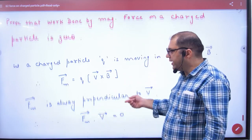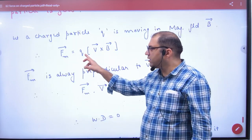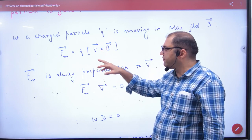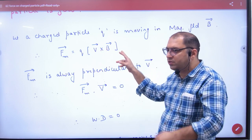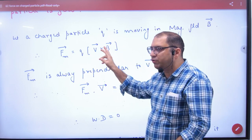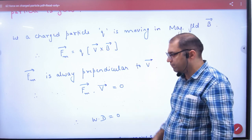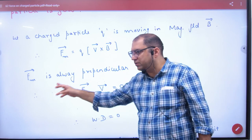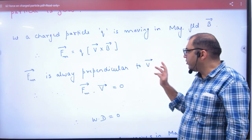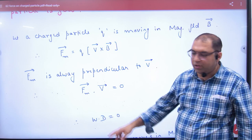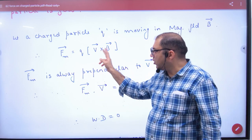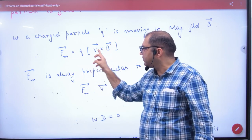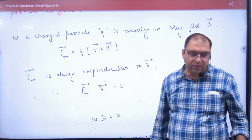Mathematically, if a charged particle moves with velocity V, then what is the force? Q into V cross B. Now, this force is always perpendicular to V vector. Why? Because of the cross product — this vector will always be at 90 degrees.